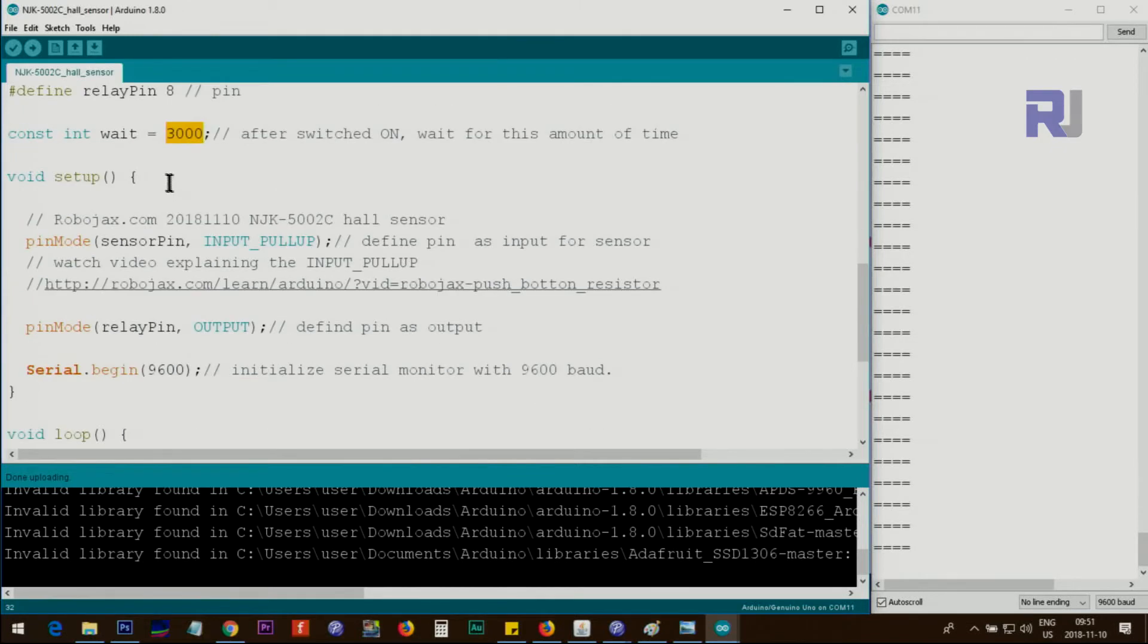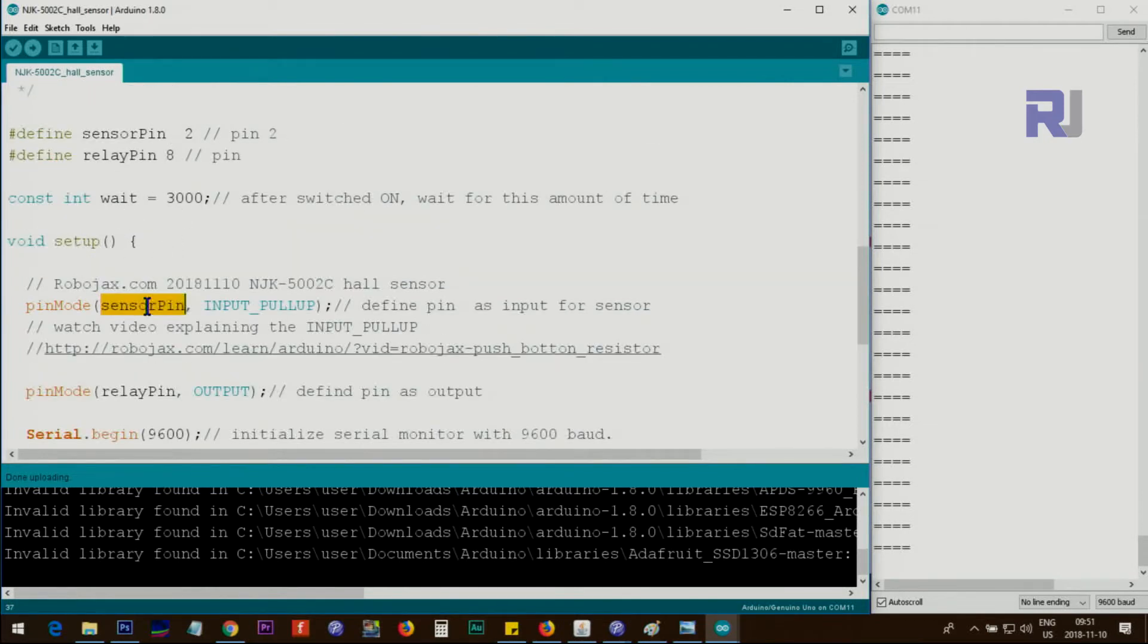Inside the setup, which starts from here to here, this code will run only once. We use pinMode, we say pinMode sensor pin, which we have defined here, pin 2, and we say INPUT_PULLUP because this sensor needs a pull-up resistor. I've explained it in a separate video at this link. It just eliminates usage of an extra resistor.